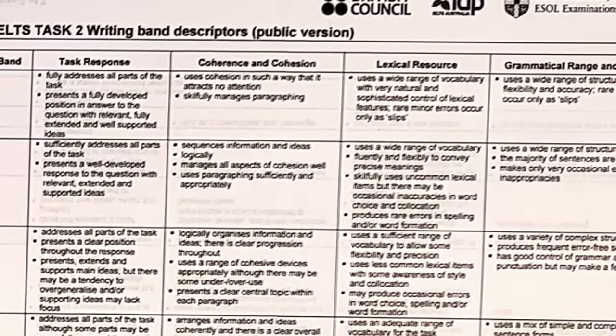Then we need to address the second question: 'but this can have negative consequences — because they can distract children from family life.' We are telling them exactly what we think: it's negative, and why we think it. So I have sufficiently addressed all parts of the task. I've sequenced the information logically — answered question one then question two — and I've used a wide range of vocabulary without any imprecision. The only high-level language really is 'engrossing,' and you could change that to 'entertaining.' But all of the language is precise and accurate. It's not about completely transforming what you're doing — it's about making these small tweaks.